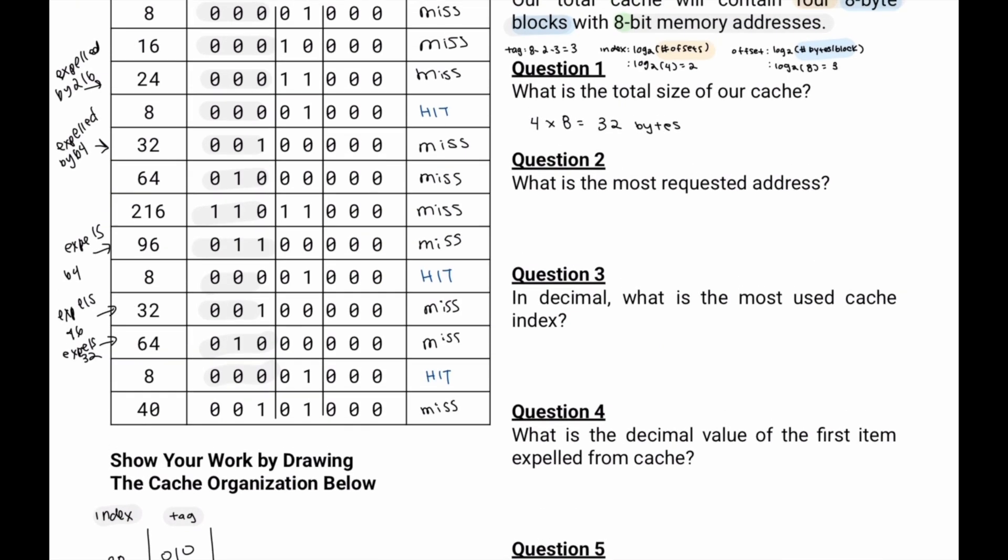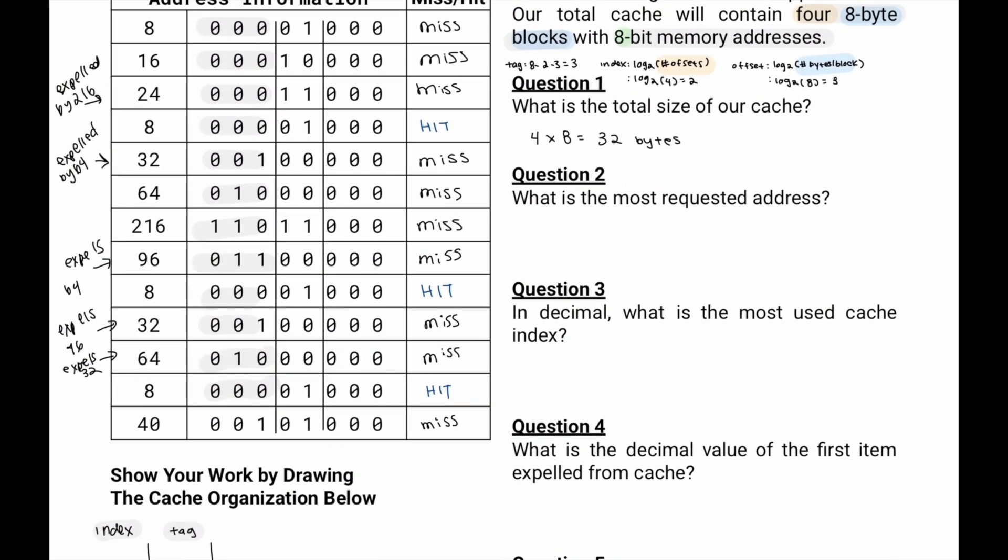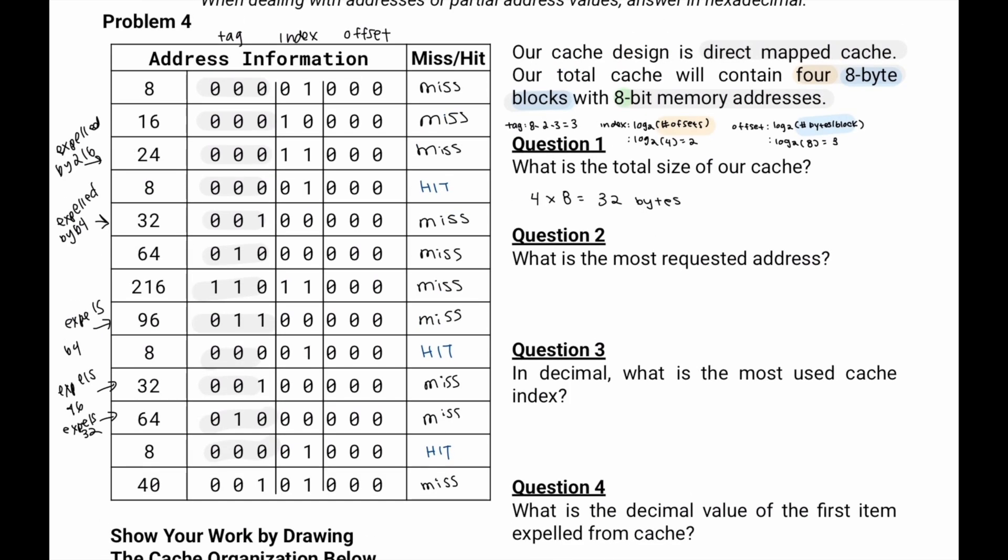What was the most requested address? If we look at this table over here, we'll see 8 is accessed 1, 2, 3, 4 times. So we'll just say 0x8. All the others are requested less than 4 times.